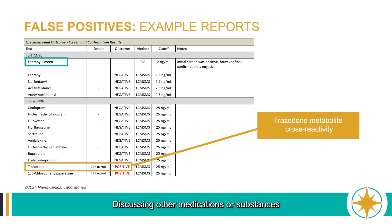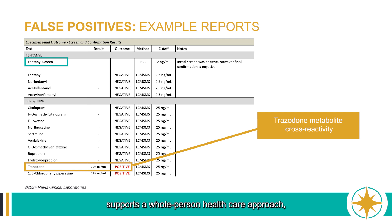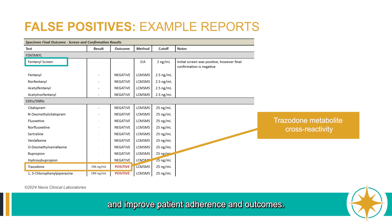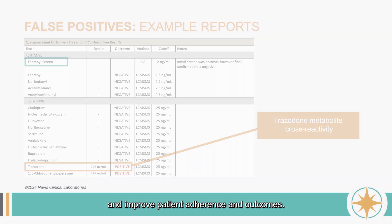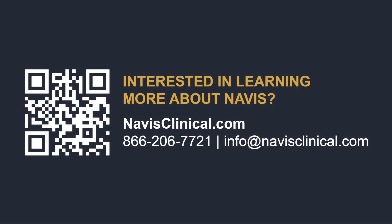Discussing other medications or substances that may affect your patient test results supports a whole-person healthcare approach and can help increase clinician-patient trust and improve patient adherence and outcomes. For more information about Navis' testing options, visit navisclinical.com or call 866-206-7721.